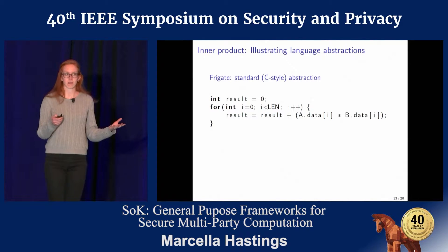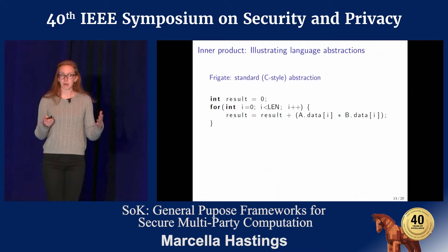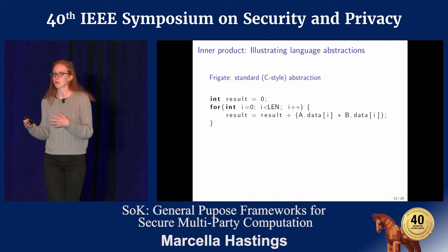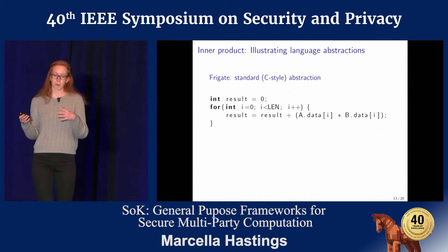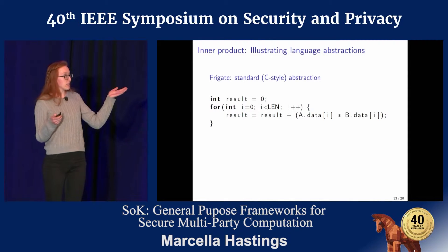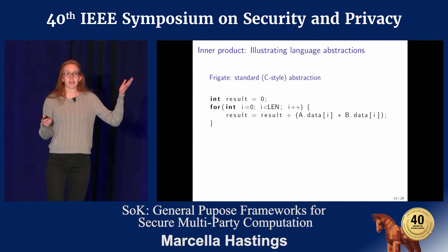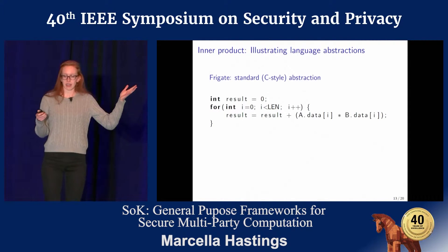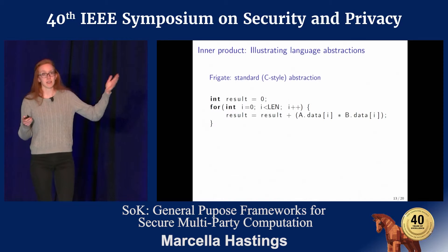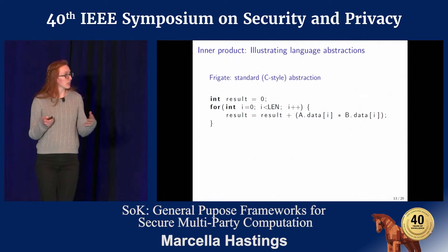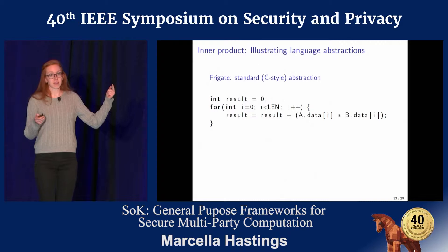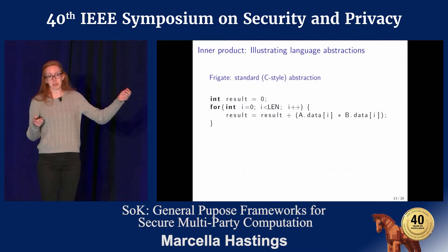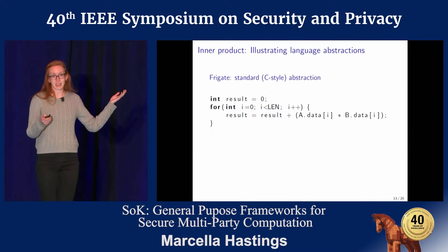The example we're going to use is one of our sample programs, which is the inner product — it takes the sum of the pairwise product of two vectors. Frigit is a circuit compiler and it uses a pretty traditional C-style abstraction. You can see an implementation of the inner product here: you take a result, then you loop over your vectors, and for each element you multiply them together and add them to your sum.